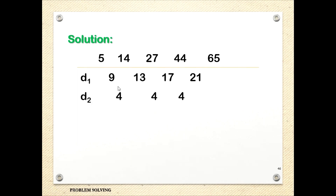The next row of differences: 13 minus 9 is 4. 17 minus 13 is 4. 21 minus 17 is 4. Since all of these second differences are equal, we will now stop.